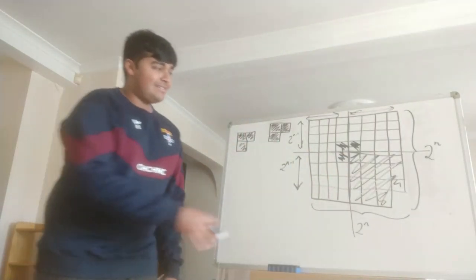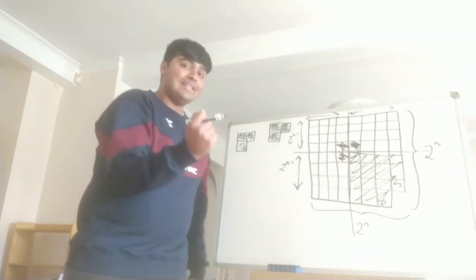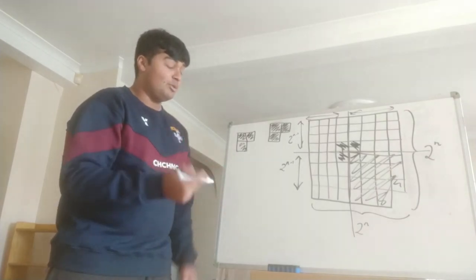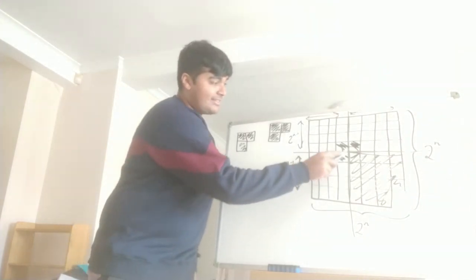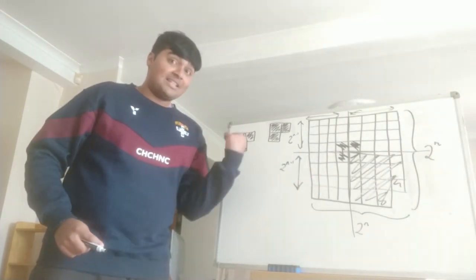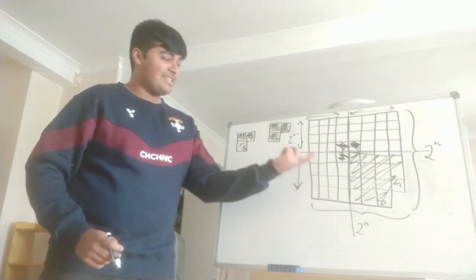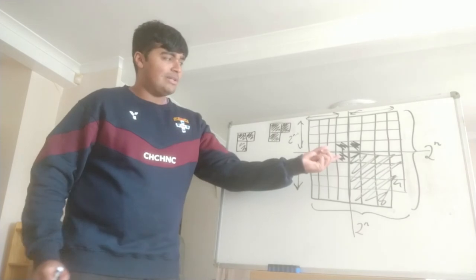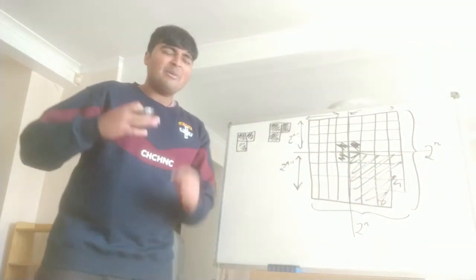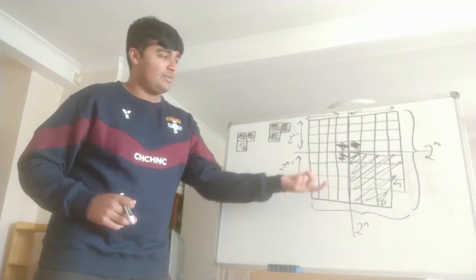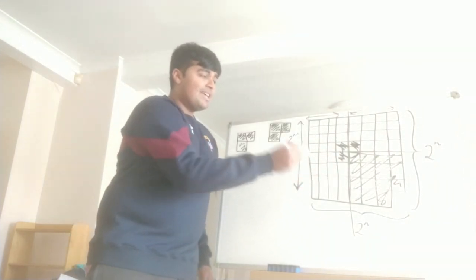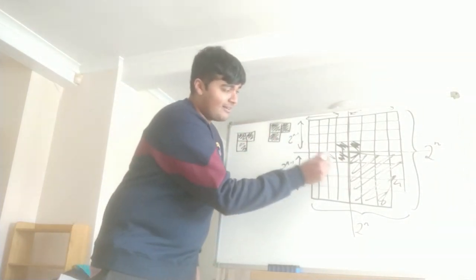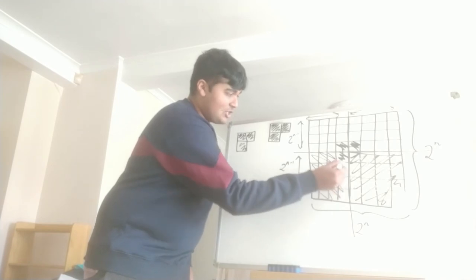Now we see that this is a 2^(n-1) by 2^(n-1) chessboard with a corner missing, this corner here. By our assumption, we can cover the rest of this using these tiles. You might wonder, the corner is here as opposed to there - it doesn't really matter, we can rotate this if we want. We've got a corner missing, and by our assumption we can cover this using these shapes.